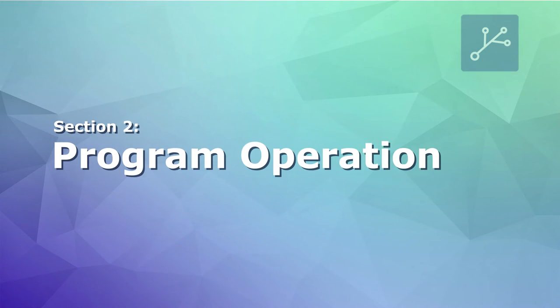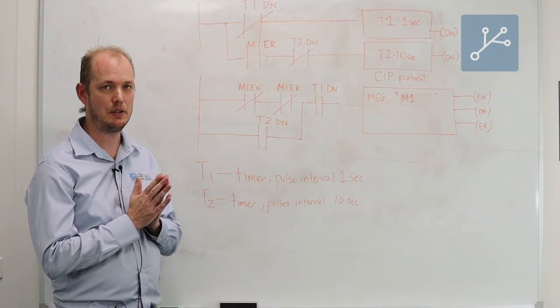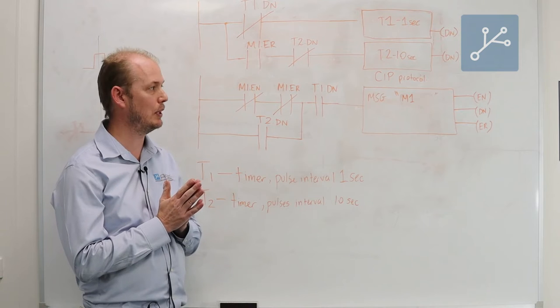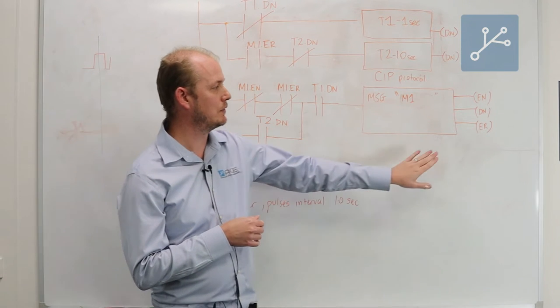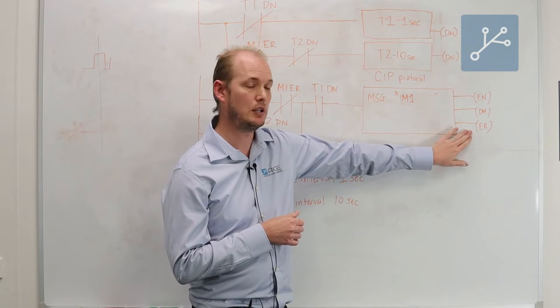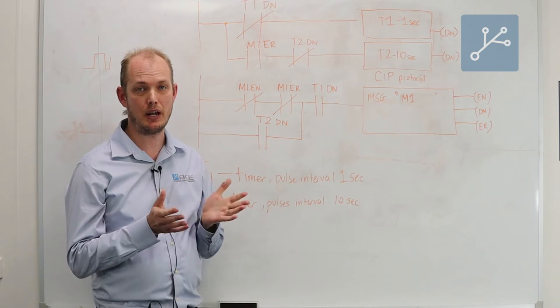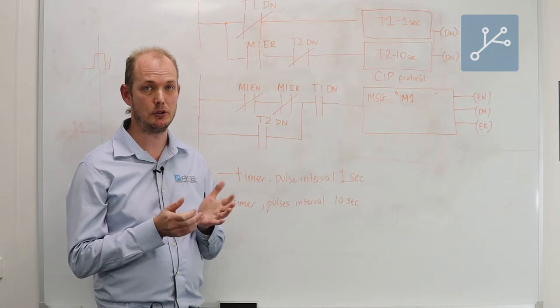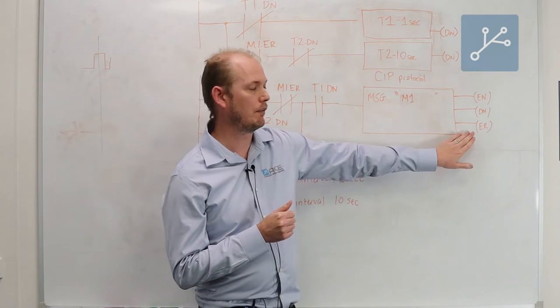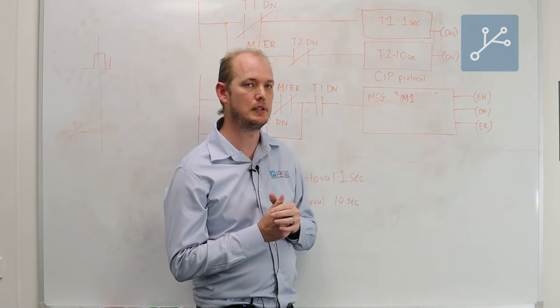In normal operation we're looking for the done bit because that means a successful message is being processed. An error bit obviously means there's something wrong with the message instruction. In terms of a network layout, it might be that the destination PLC is not reachable, so we'll get this error flag or error bit will be set.